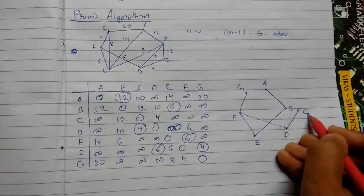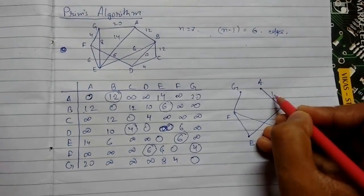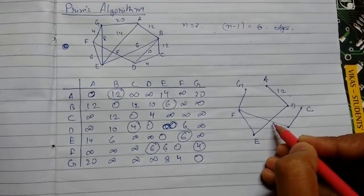So this is C. So now at last you can write the weights. So 12, B to E was 6.